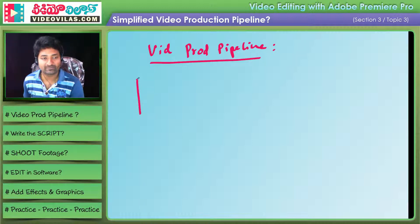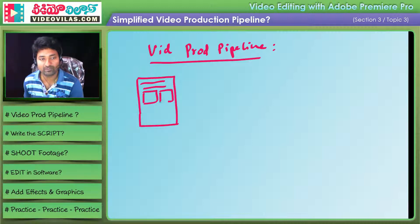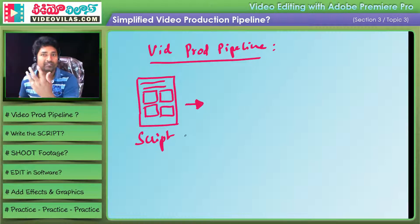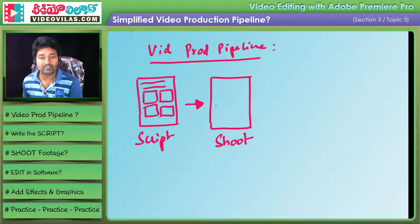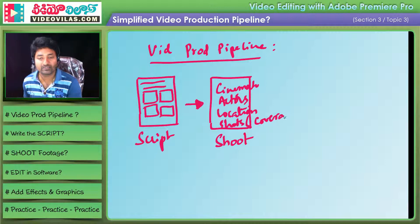Script writing involves both visual and audio elements of the script. Next, during production, we consider the camera, actors, and detail. Shooting involves the actors, location, and types of shots including cover footage, followed by the editing system and workflow.